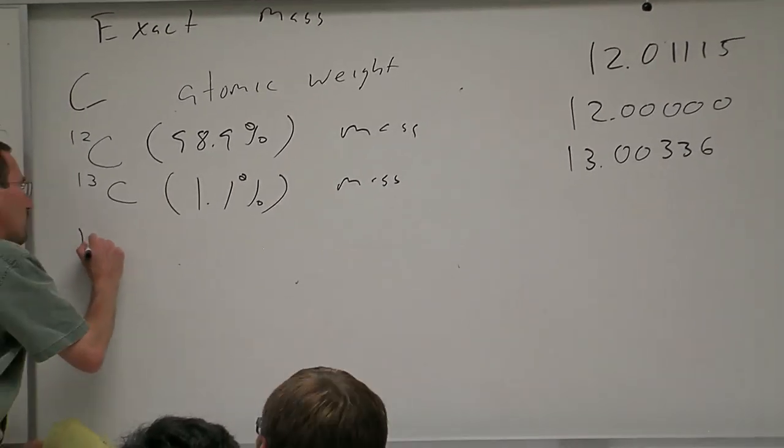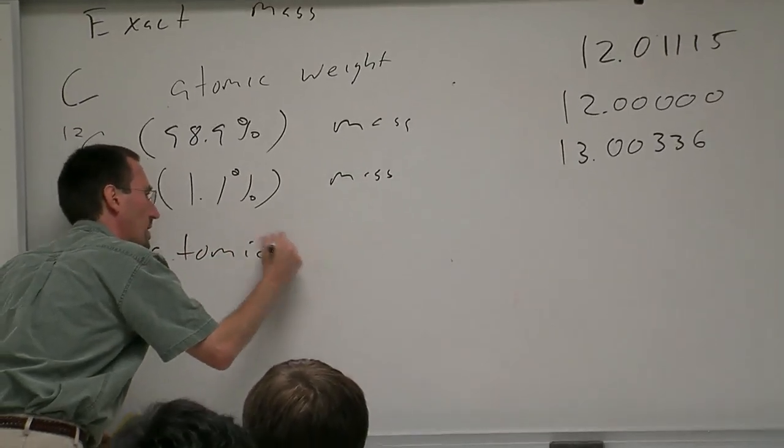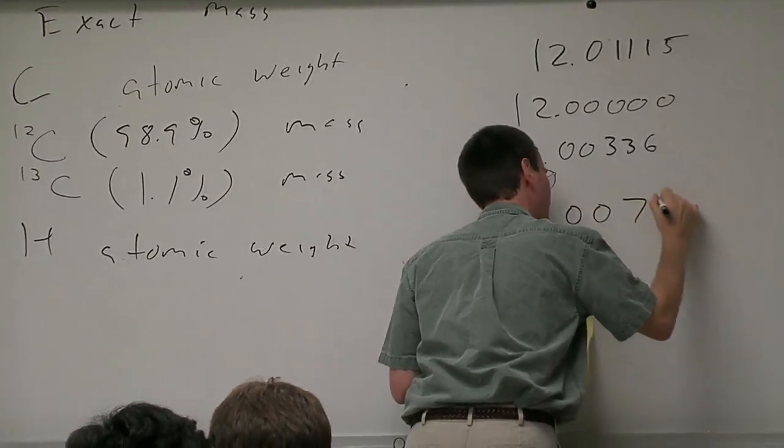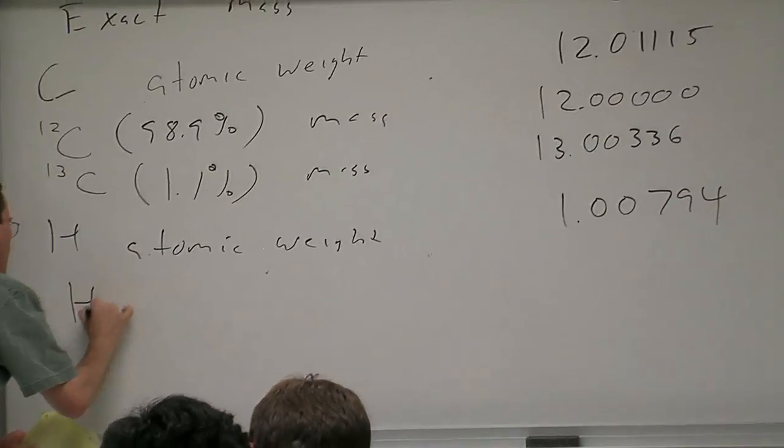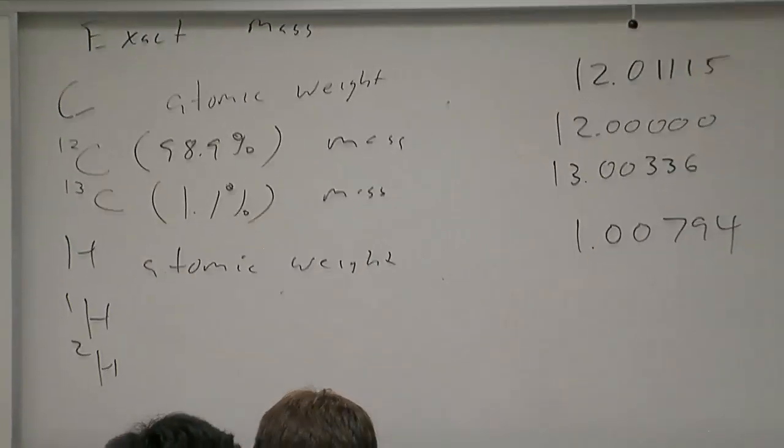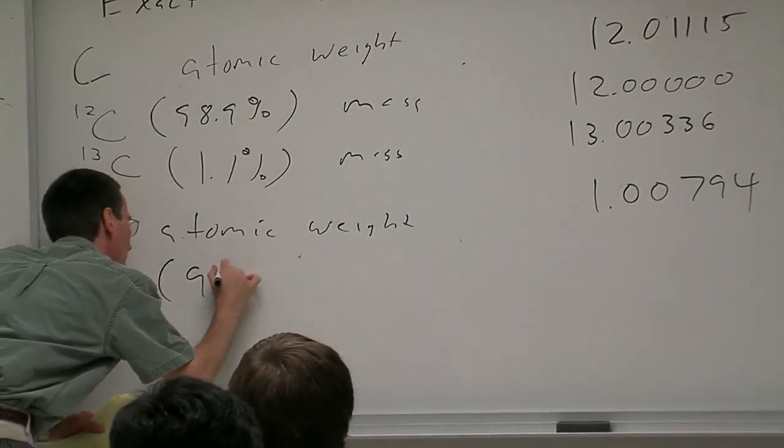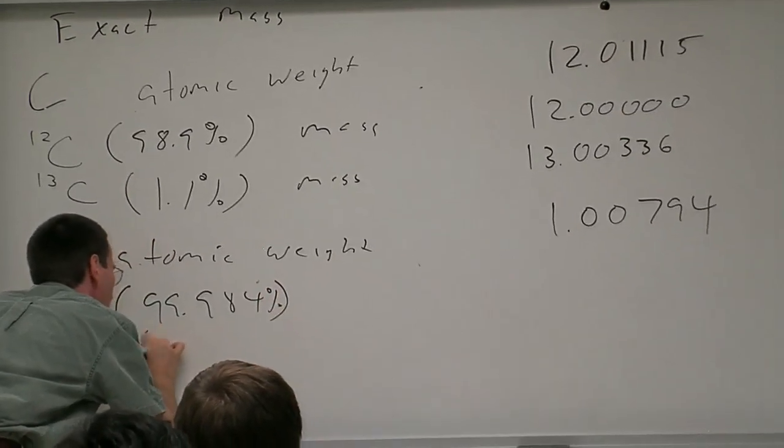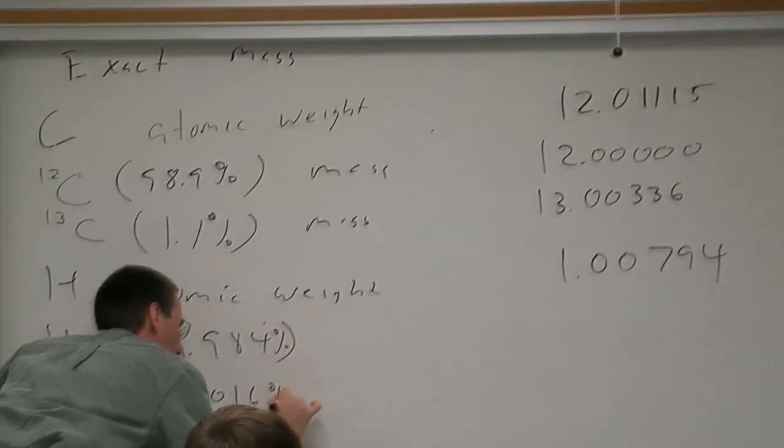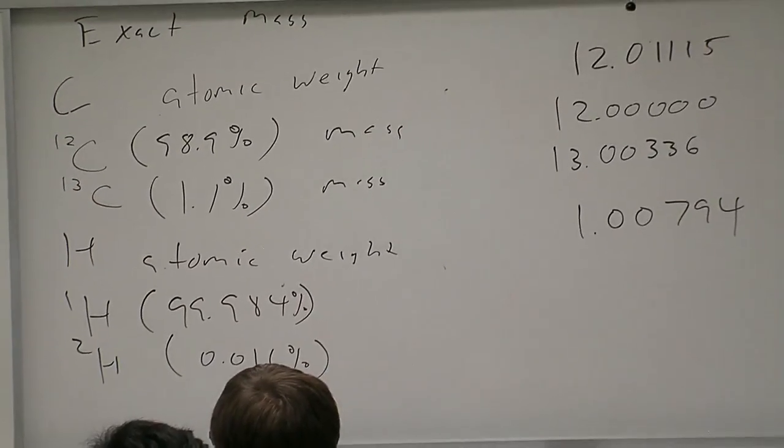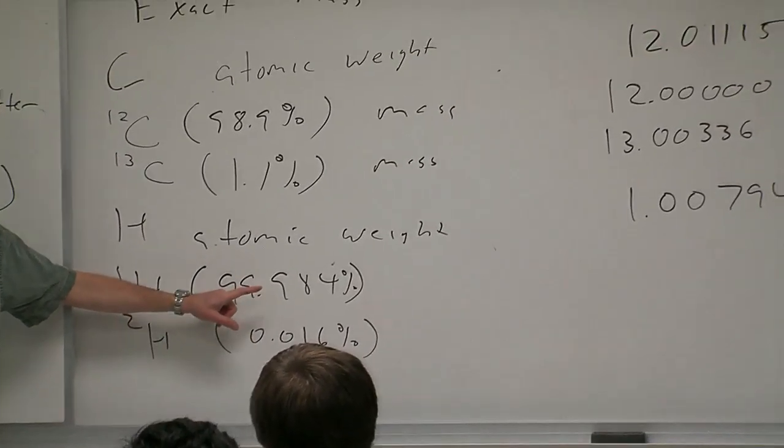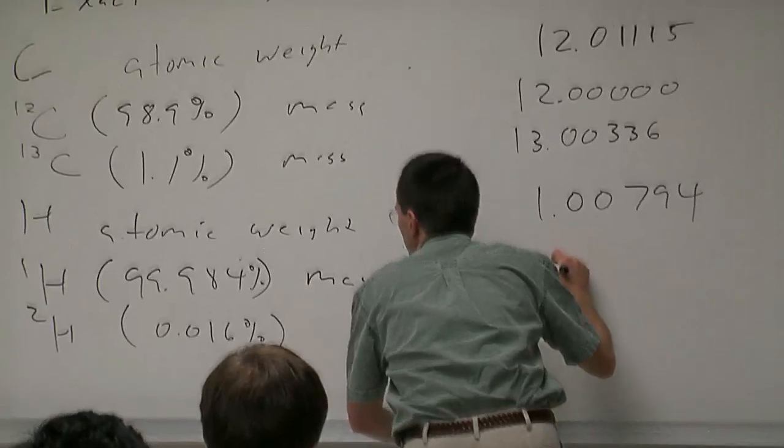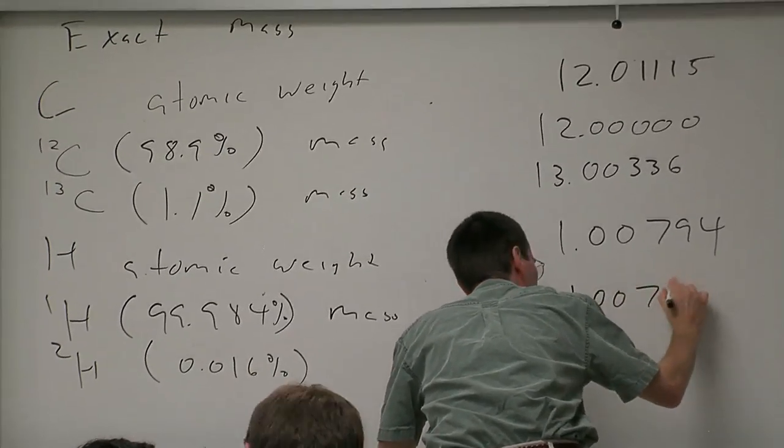Other elements also have isotopes. Hydrogen, for example, the atomic weight in the periodic table is 1.00794, and yet hydrogen is a mix of hydrogen and deuterium. It's mostly, mostly hydrogen, 99.984 percent H1 and only 0.016 percent H2. So when you're thinking about mass spectrometry you want to use the mass of H1 and the mass of H1 is 1.00783.